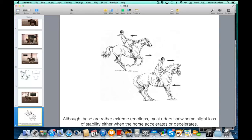Even in the transition from walk to halt, the rider will sometimes end up tipping forward like she's surprised by the deceleration, or maybe even leaning back like the rider in the top photo because she thinks that's going to make the horse halt.